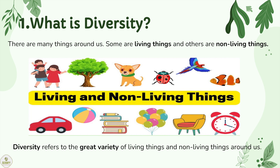First, we will learn about what diversity is. There are many things around us. Some are living things and others are non-living things. Examples of living things include a human, a tree, a dog, a bug, a bird, a fish. Non-living things include a car, a ball, books, a balloon, a chair, a clock. Diversity refers to the great variety of living things and non-living things around us.